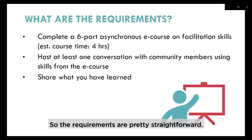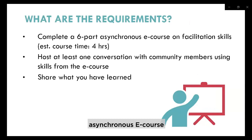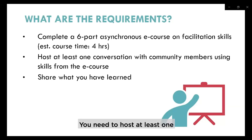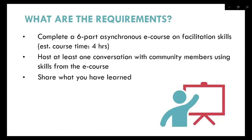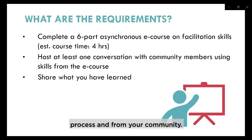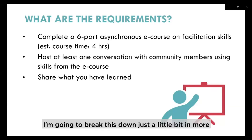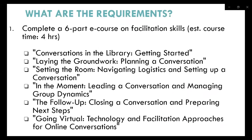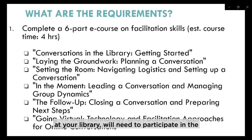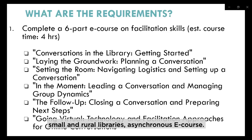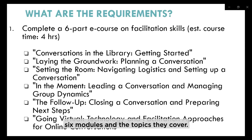You need to complete a six-part asynchronous e-course teaching facilitation skills — it's about a four-hour commitment. You need to host at least one conversation with community members using the skills that you learned in the e-course, and then you need to share what you've learned in this process and from your community. The project director at your library will need to participate in the Facilitation Skills for Small and Rural Libraries asynchronous e-course. This course will take approximately four hours to complete and covers six modules.